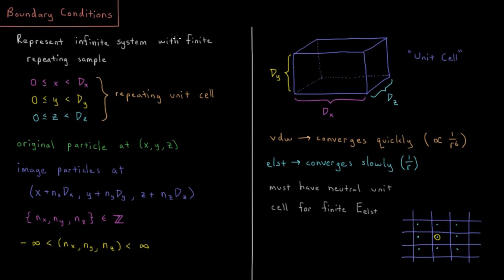So in order to do that, typically what we do is we set up what's called a repeating unit cell. We can imagine we have some type of box and we have all of our atoms and molecules and our simulation inside this box. And then this box is going to repeat itself in every direction.